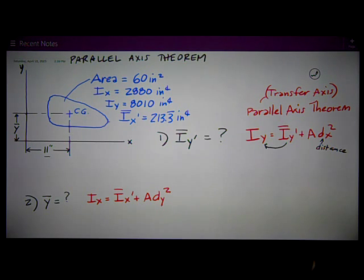So in this case I know Iy, that's 8010. And I know dx, that distance is 11. So I want to rearrange it to solve for Ī_y'. So Ī_y', just rearranging the parallel axis theorem, is equal to Iy minus Adx².